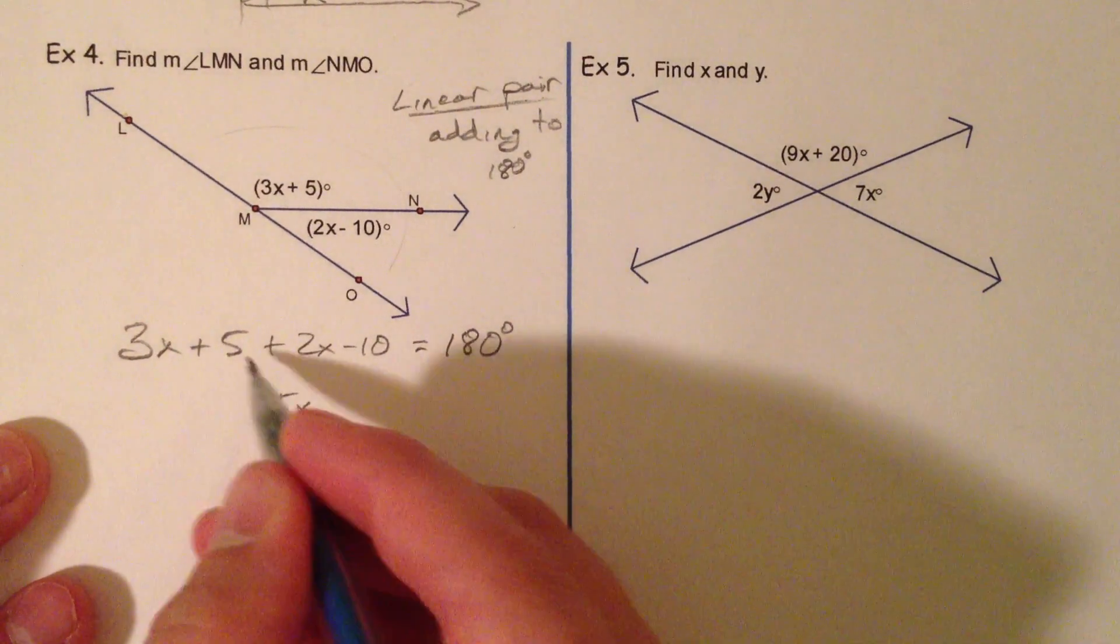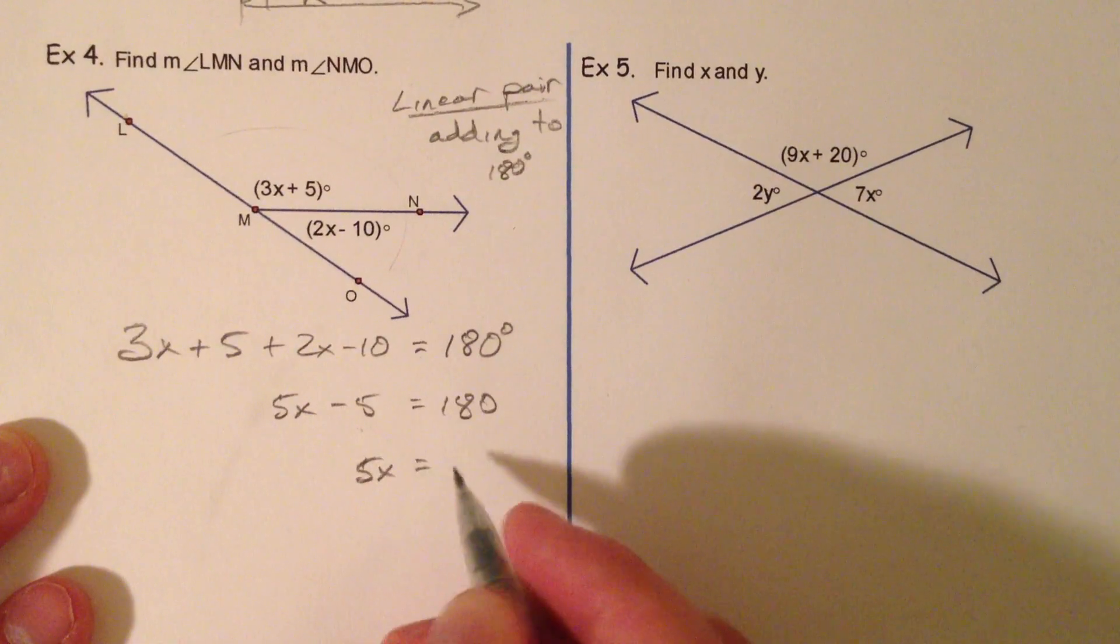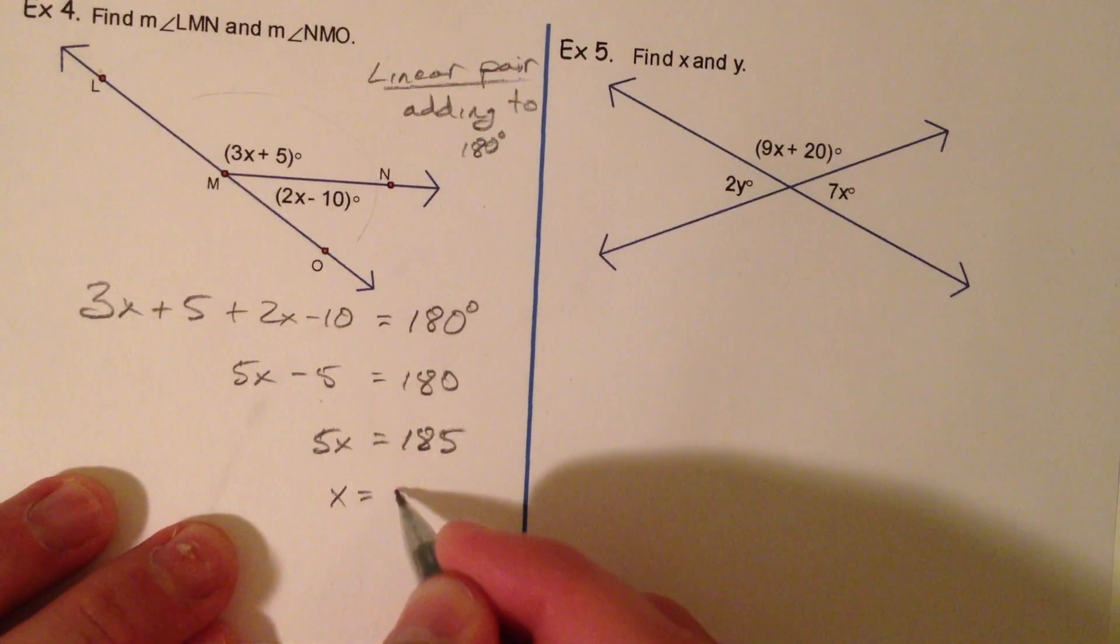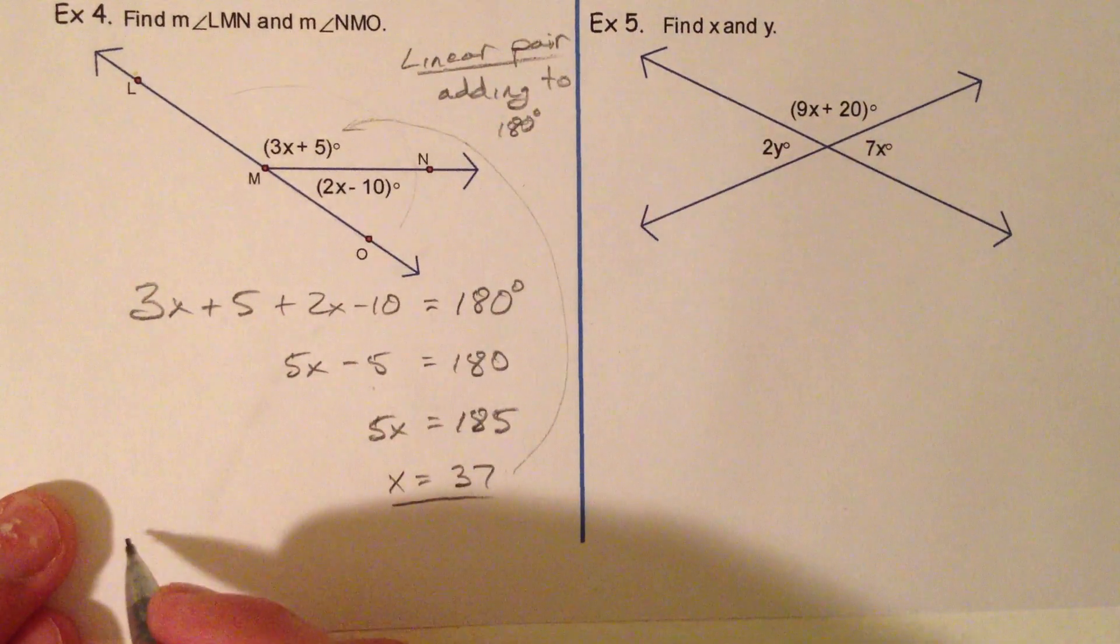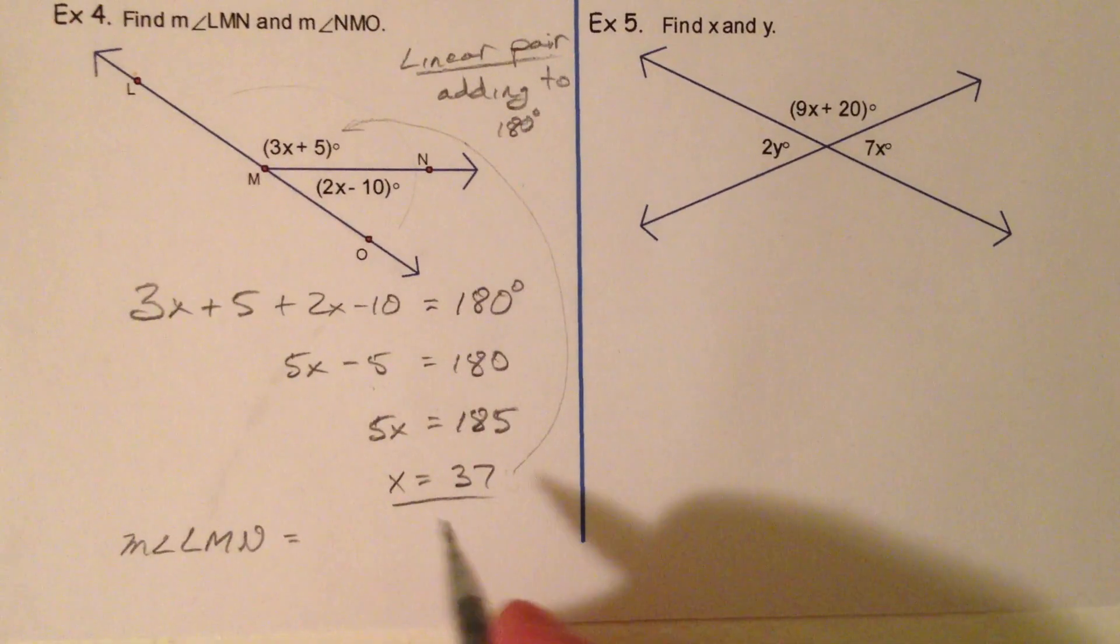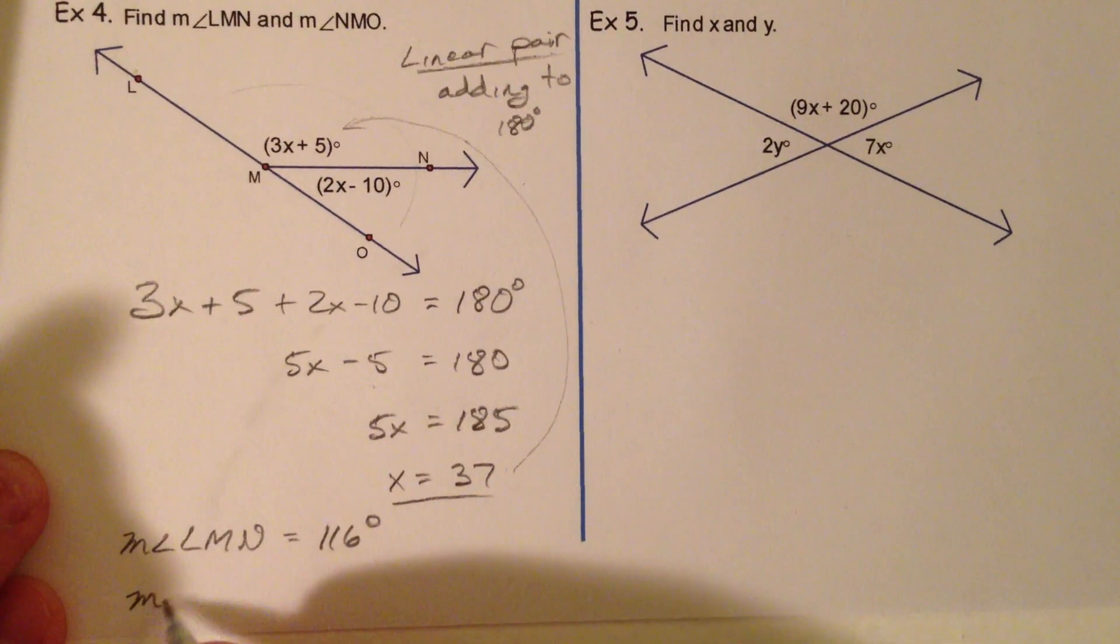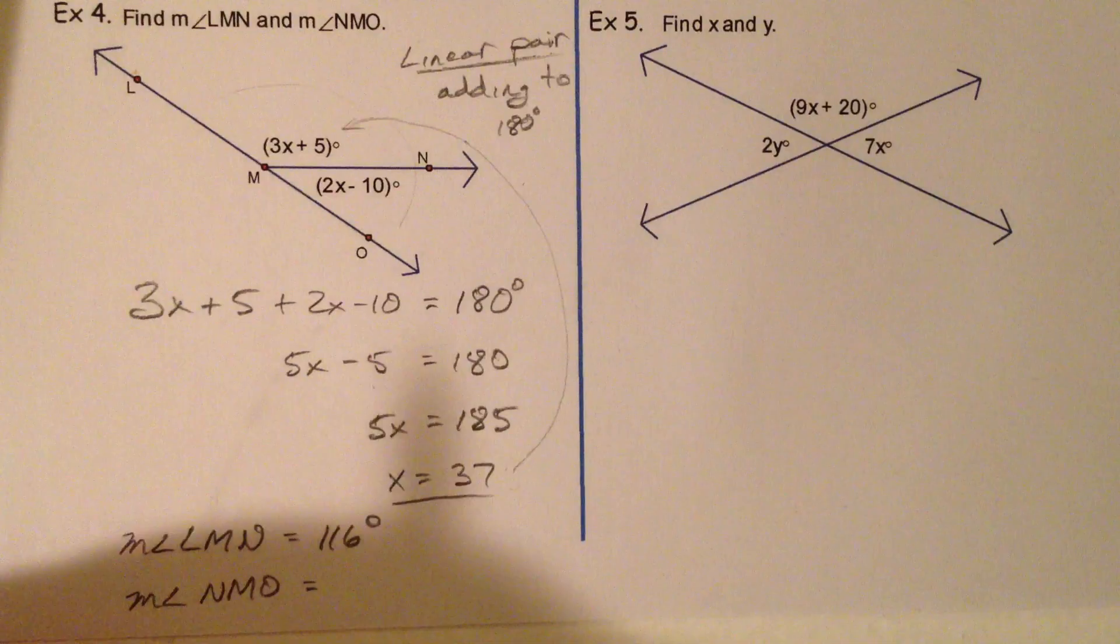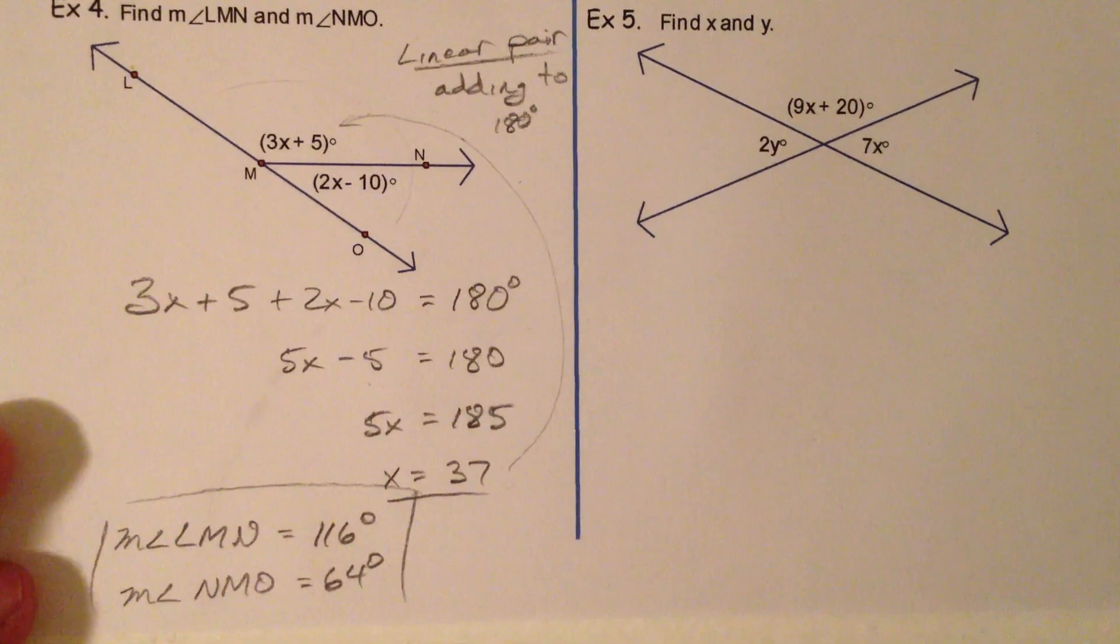3X and 2X make 5X. 5 minus 10 is a negative 5. And if you add 5 to the other side, you get 185. And 185 divided by 5 is 37. So that's X. So if you take that and plug it back in, LMN is 3 times 37 plus 5, 116. And measure of angle NMO, 2 times 37 minus 10, you get 64. 116 plus 64 is 180. We're in good shape. Double check those answers.